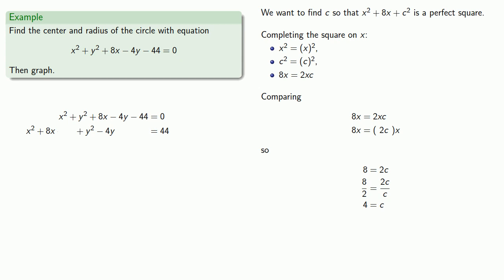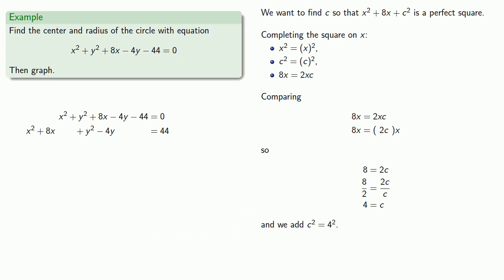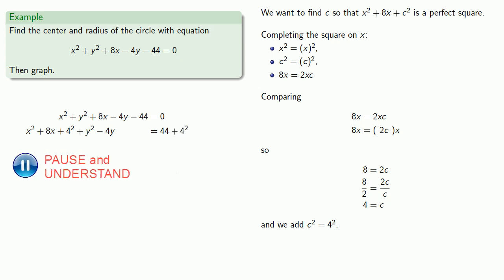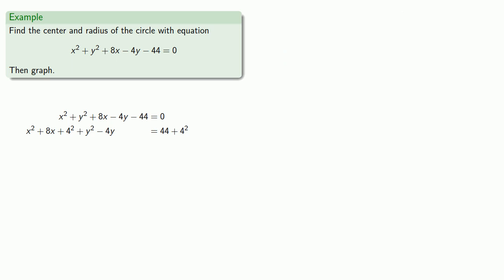This means we want to add c squared, which is 4 squared. Since this is an equation, we can add 4 squared to one side as long as we add 4 squared to the other side as well. Now our x terms plus that extra constant make up a perfect square. We also want to do the same thing for our y terms.